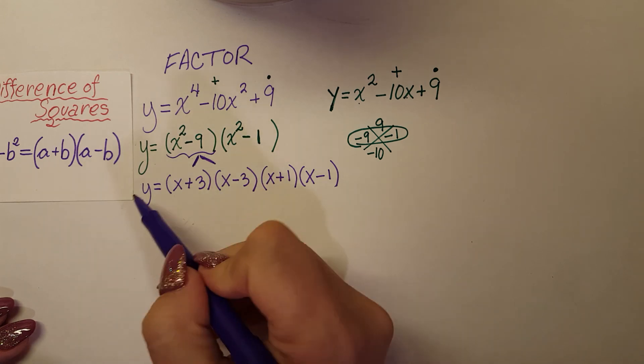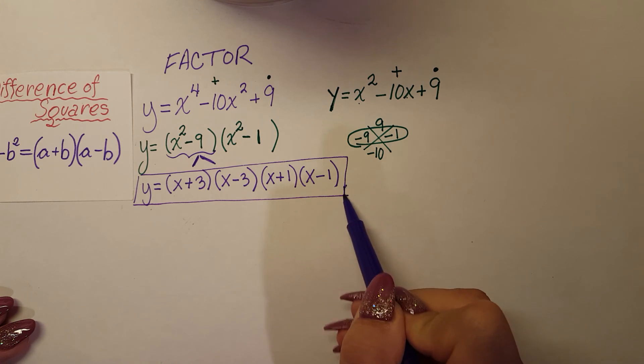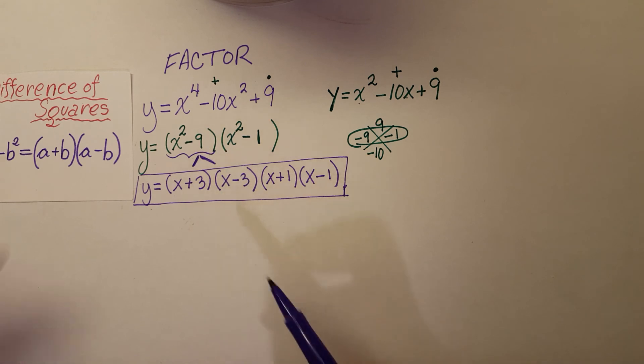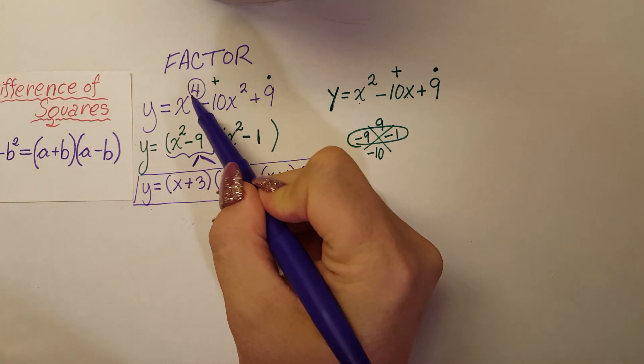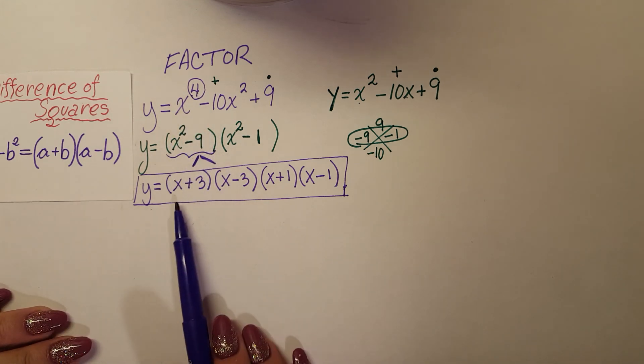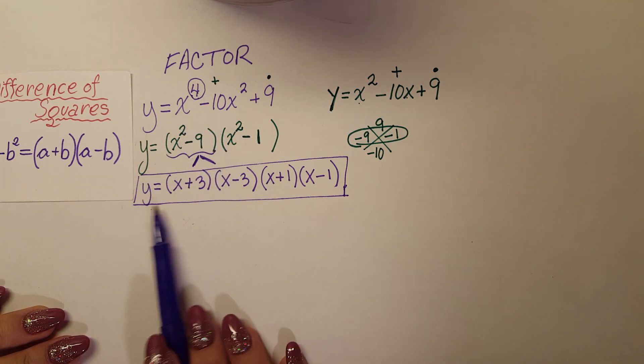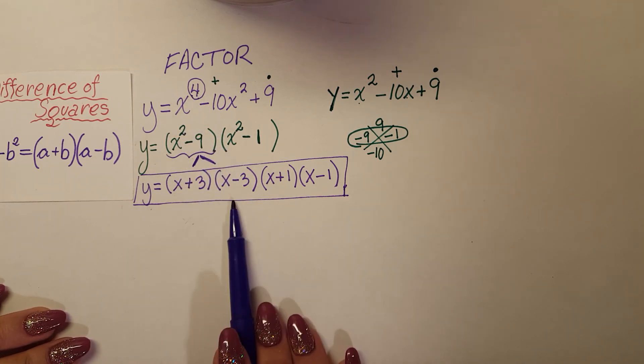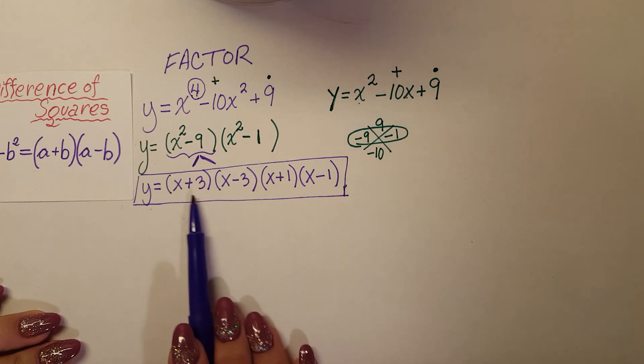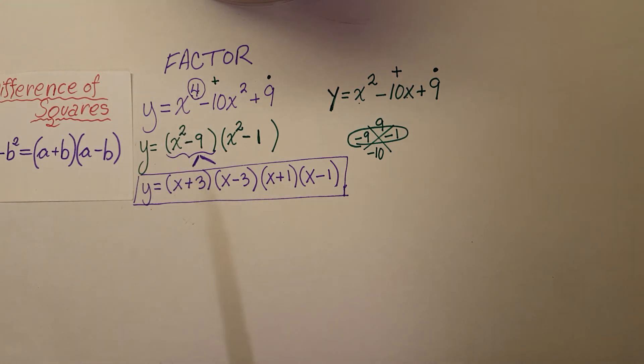So basically, another quick way to check it is to look at your highest exponent. Our highest exponent is 4, so we have a polynomial of degree 4. So when we factor this and we get our solutions, we should have a total of 4 solutions. And we're not going to get into solutions in this video, but that would be the next following step. So we have our 1, 2, 3, 4 factors of our quartic polynomial.